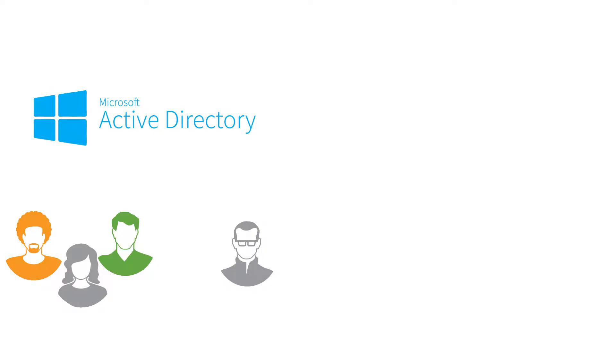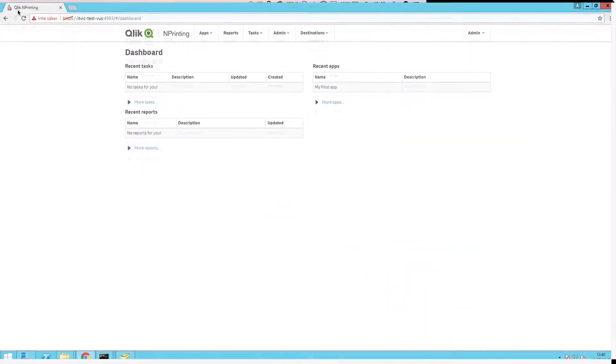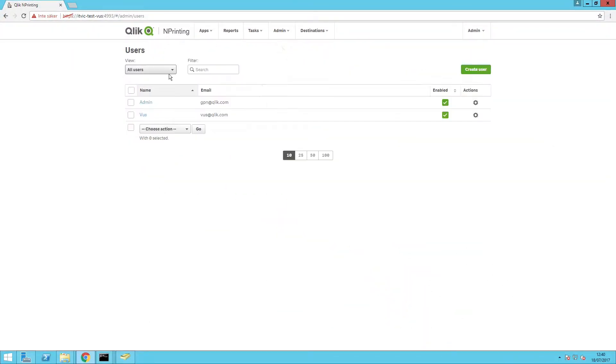With the AdSync to NPrinting tool, you can import groups and users from an Active Directory controller into NPrinting through the REST API. This will let you keep your groups and users in sync between Active Directory and NPrinting. The AdSync to NPrinting tool is a C-sharp library that is available on GitHub.